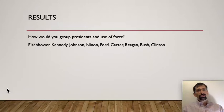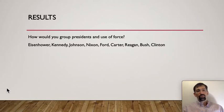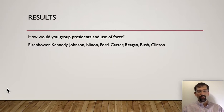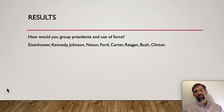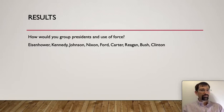Think about the presidents covered by the data: Eisenhower, Kennedy, Johnson, Nixon, Ford, Carter, Reagan, Bush, Clinton. Which of those presidents do you think has an internal versus external locus of control? Which presidents say, I can control events? Don't worry — I got this wrong too the first time I read it.